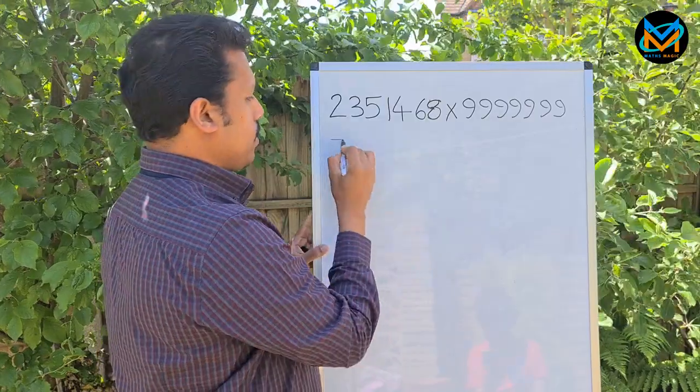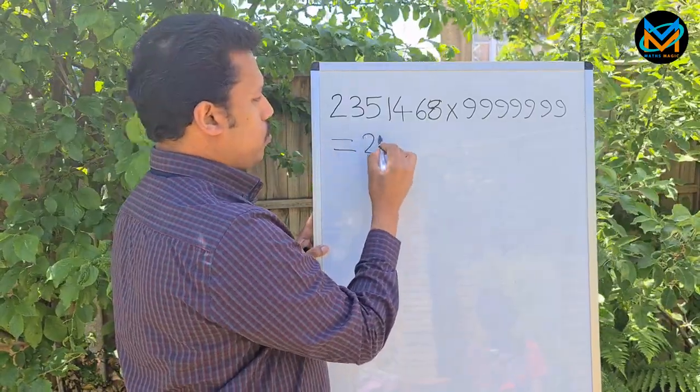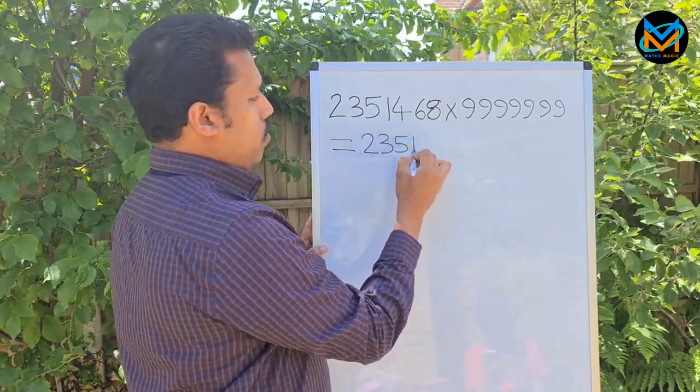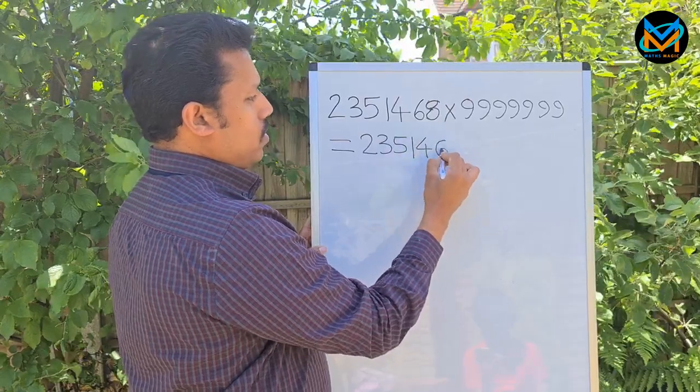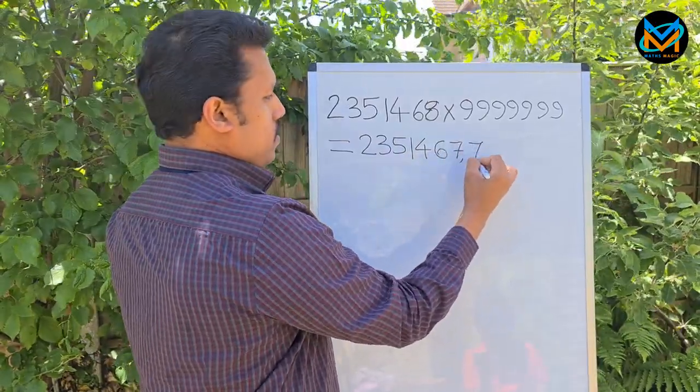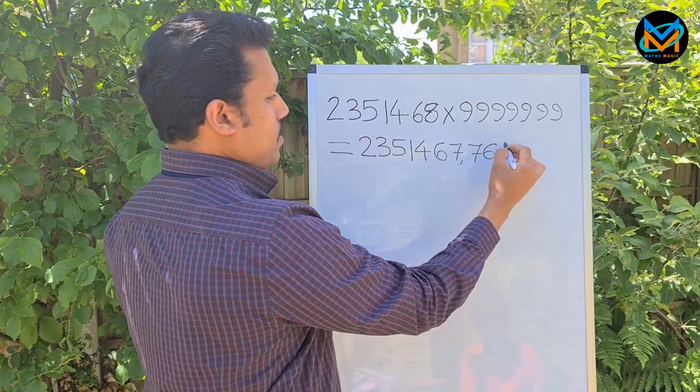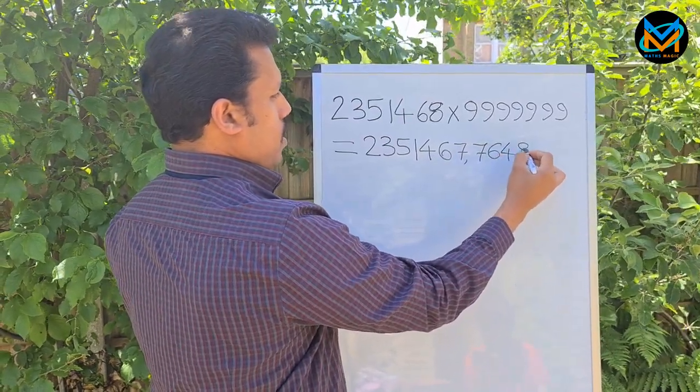I'm going to write the answer straight away. That is 2351467764853 2. That is the answer.